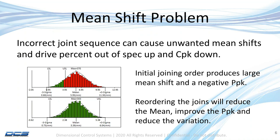Having a mean shift can result in a couple of adverse things: it can drive the percent out of spec to be quite high, as shown in this histogram of production. On the left-hand side, with the mean shift, you can see a lot of red — that's the percent out of spec. Also, as anyone who has done CPK or PPK process capability studies knows, mean shifts away from nominal really drive your statistics in a negative way.